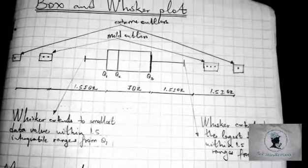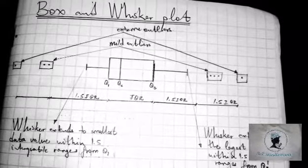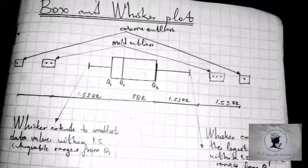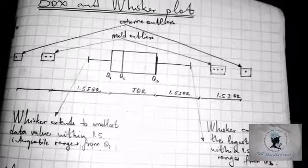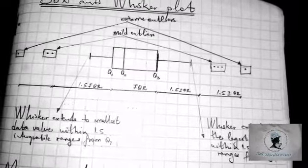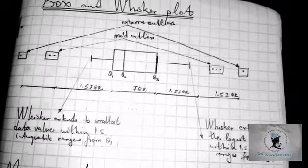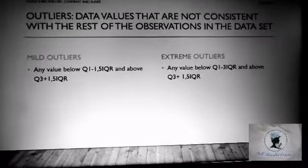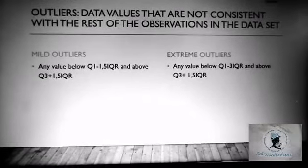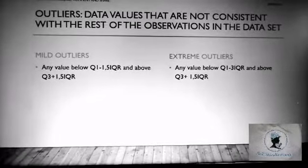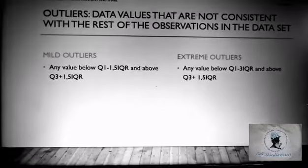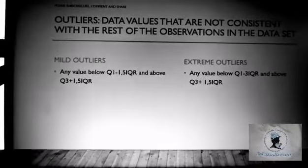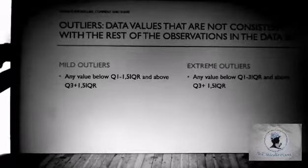Now I'm going to show you how to determine outliers. If you didn't follow the explanation, you can go back and review, and if you have questions just comment down below. We have two types of outliers: mild and extreme. Just know that outliers are data values that are not consistent with the rest of the observations in the data set.